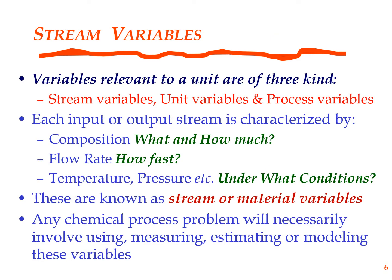What are the stream variables? Each input or output stream is characterized by three things. One is the composition — what is that stream comprised of and how much of each species is there? What are the various species present and what is their concentration or amount? The second thing is flow rate — how fast is the stream flowing into or out of the system? And the third thing is under what conditions: temperature, pressure, etc. These together form the stream variables.